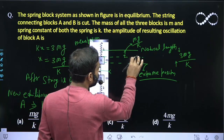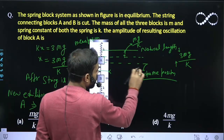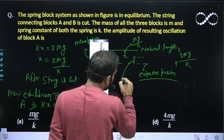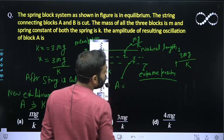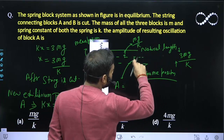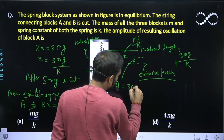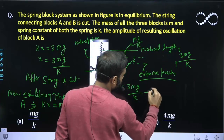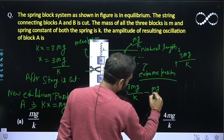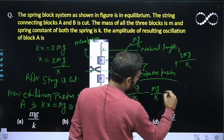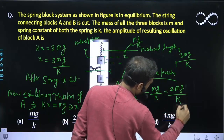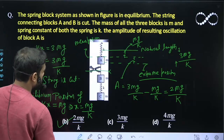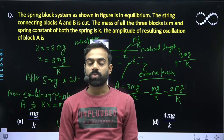Now I need to find the amplitude. This is the mean position and this is the extreme position. This amplitude equals the total length 3Mg/k minus Mg/k, which gives 2Mg/k. So the amplitude is 2Mg/k. Option B is correct. I hope you understood this question.